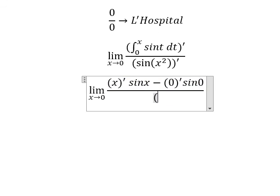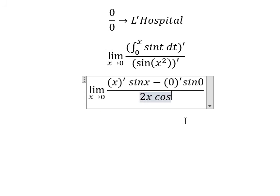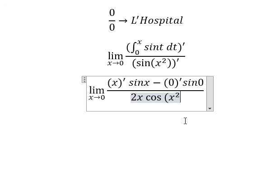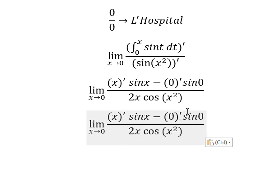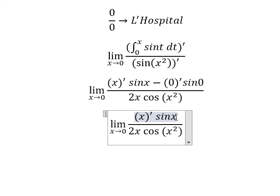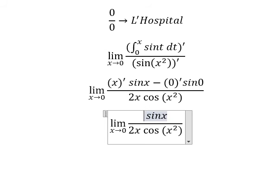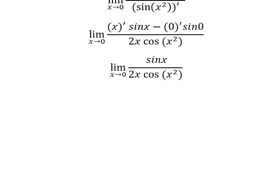This one we will have 2x cos(x²). First derivative of x, you got 1, so we just write sin(x). Next we see that we can separate them.